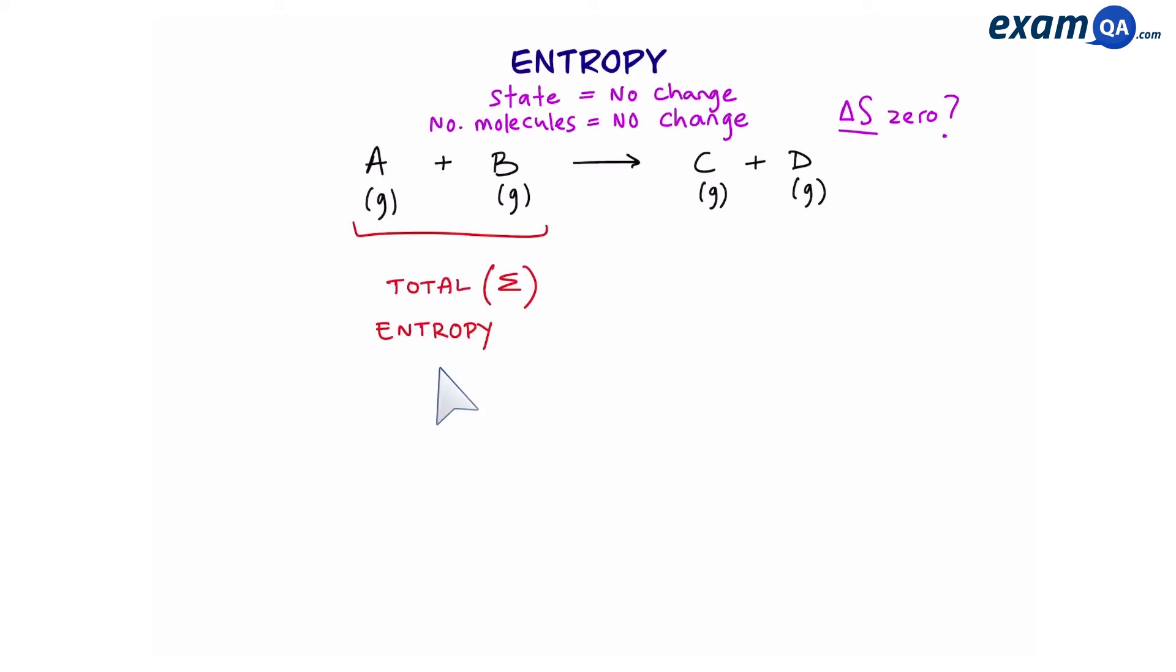First we'll work out the total entropy of the reactants and also the total entropy of the products. This symbol here that you see is called sigma, and sigma just means adding up all the values. So to work out change in entropy we have to do the following: the total entropy of the products take away the total entropy of the reactants.